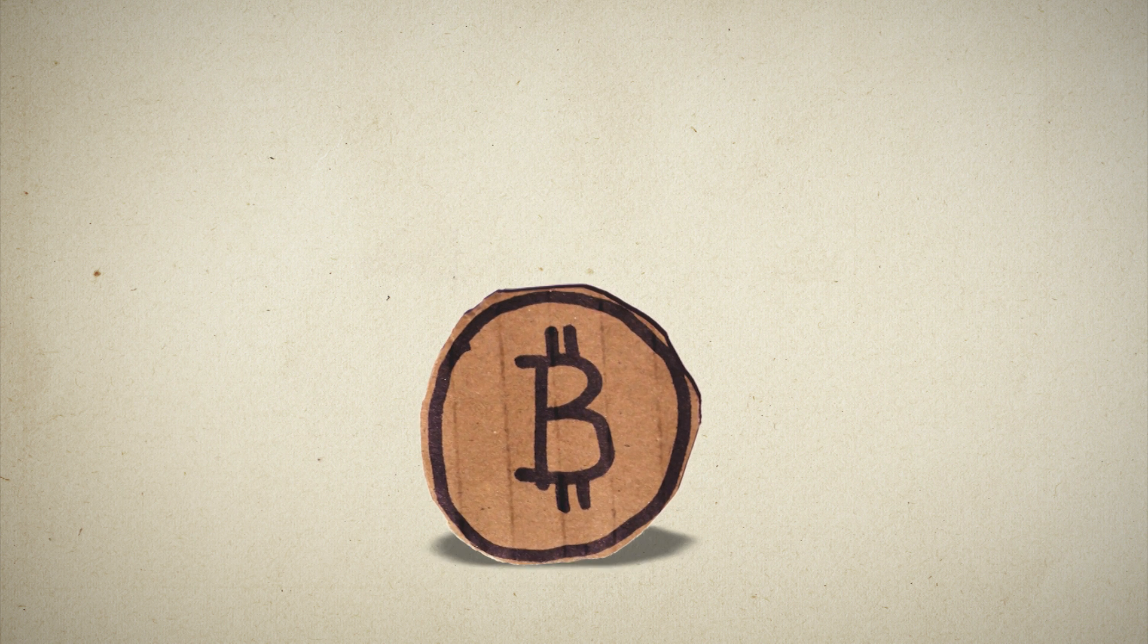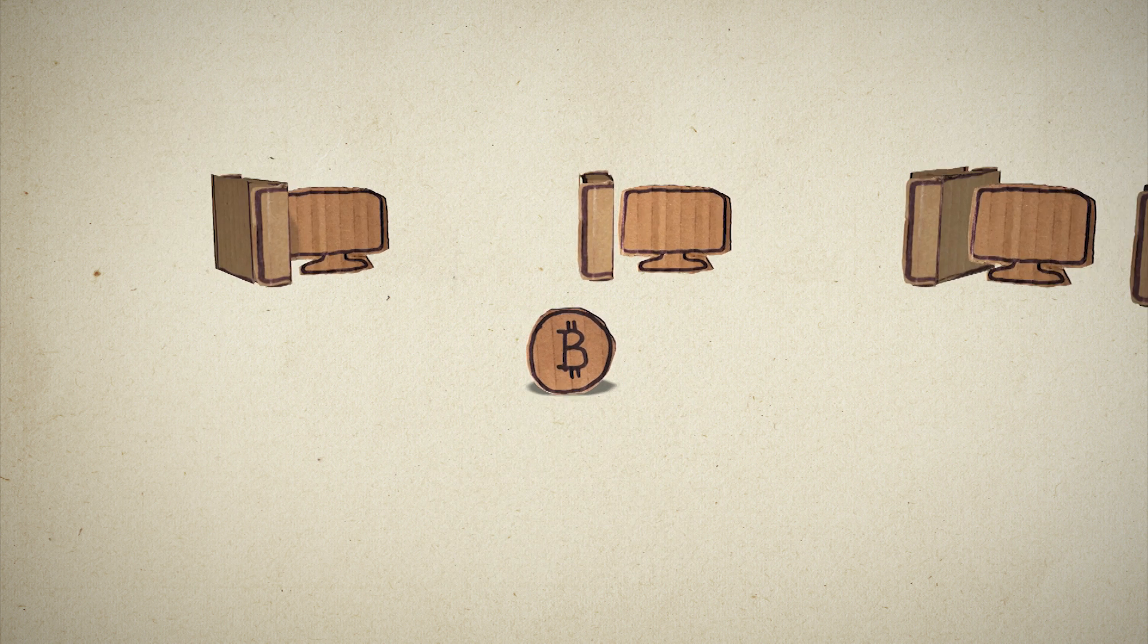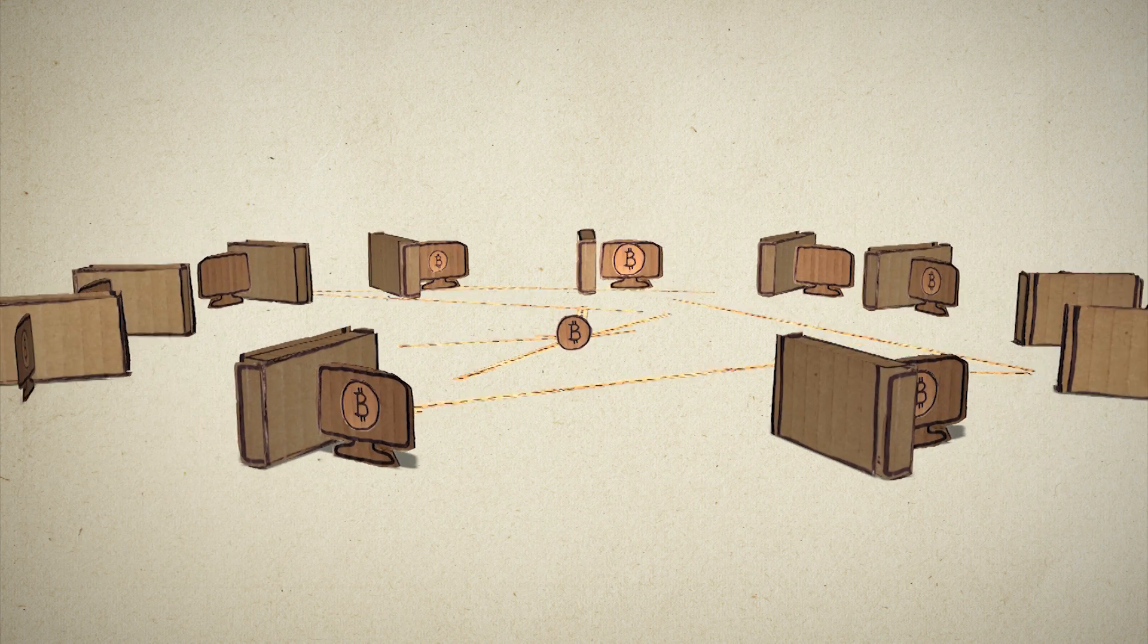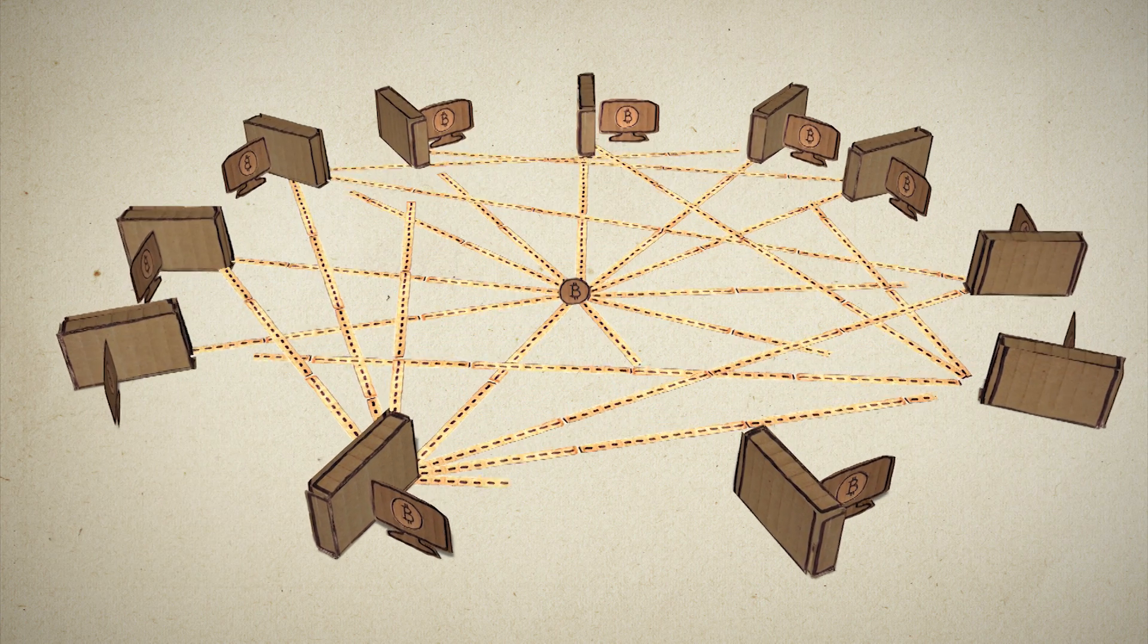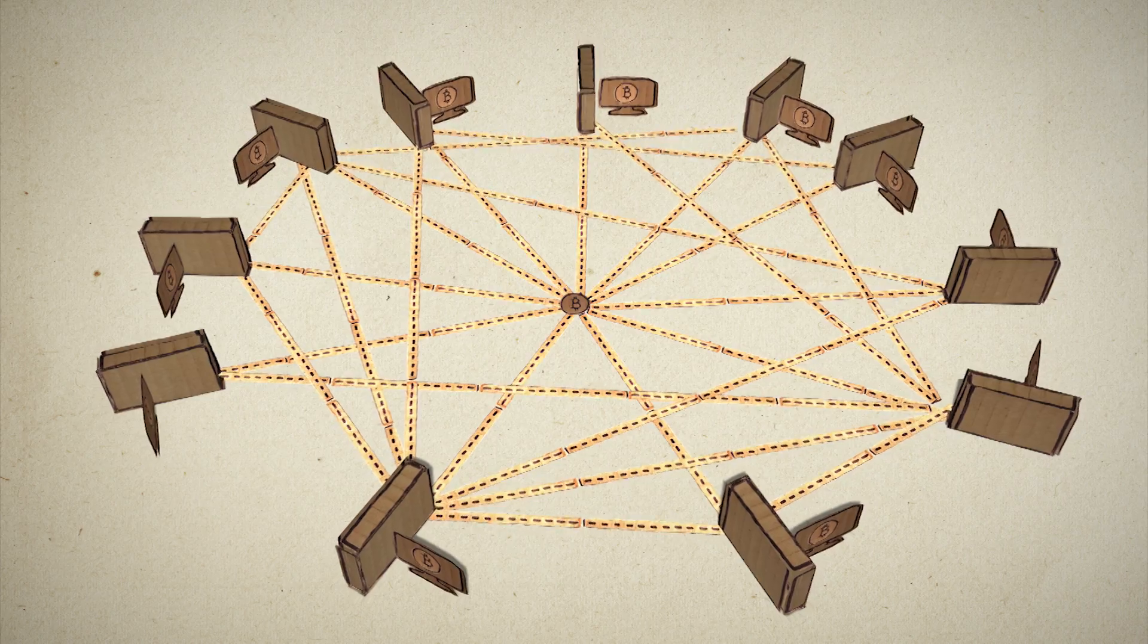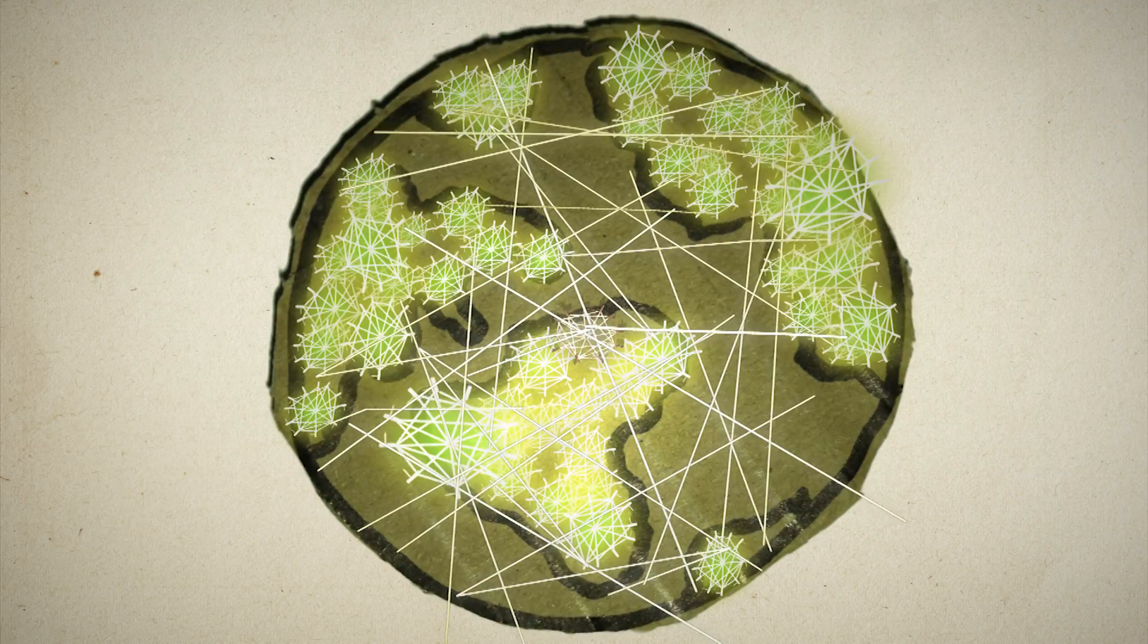Bitcoin is the first decentralized monetary system which is hosted on the web by regular people. It's based on an open source computer program that hundreds of thousands of people are running on their computers.